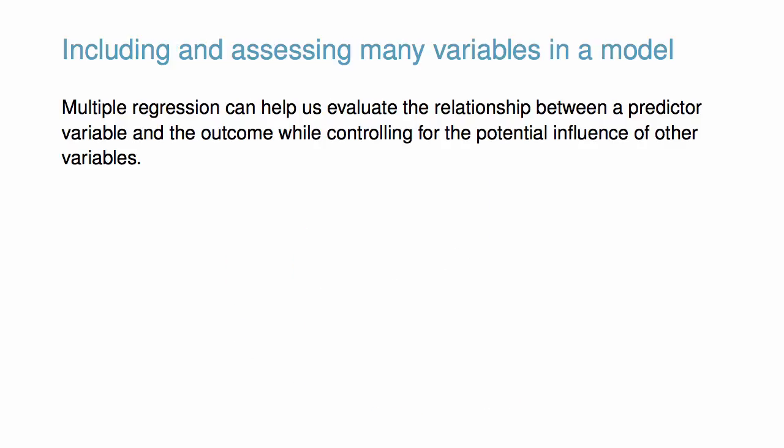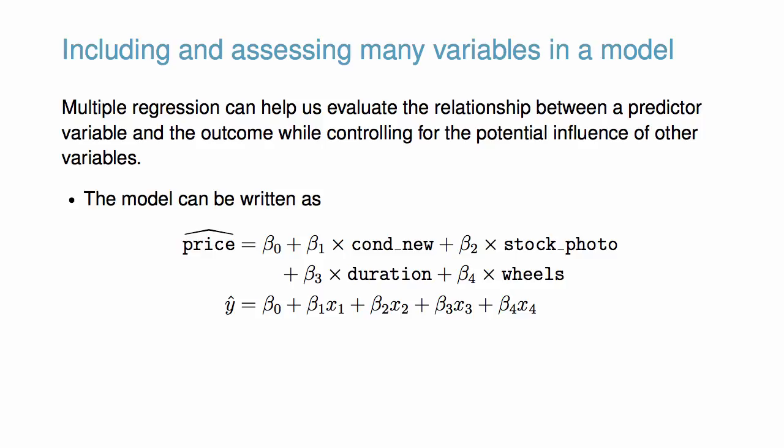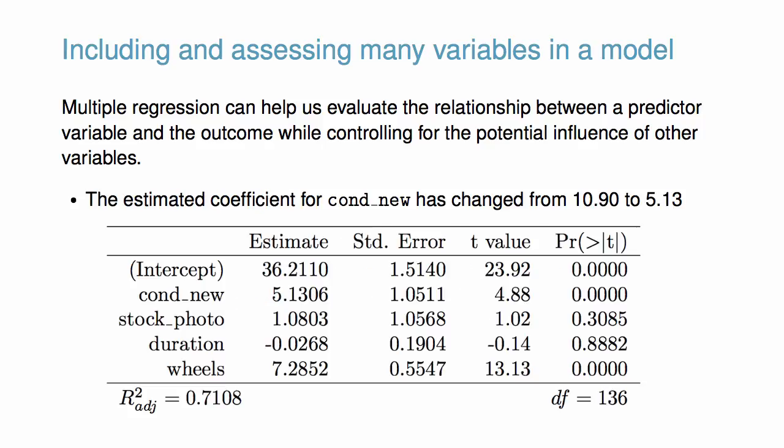Multiple regression can help us evaluate the relationship between predictor variables and the outcome while controlling for the potential influence of other variables. The model is shown here. Notice there's an intercept, beta 0, and each variable has its own regression parameter. In this model with many predictors, we can see the estimated coefficient for cond_new has changed from 10.90 to 5.13.